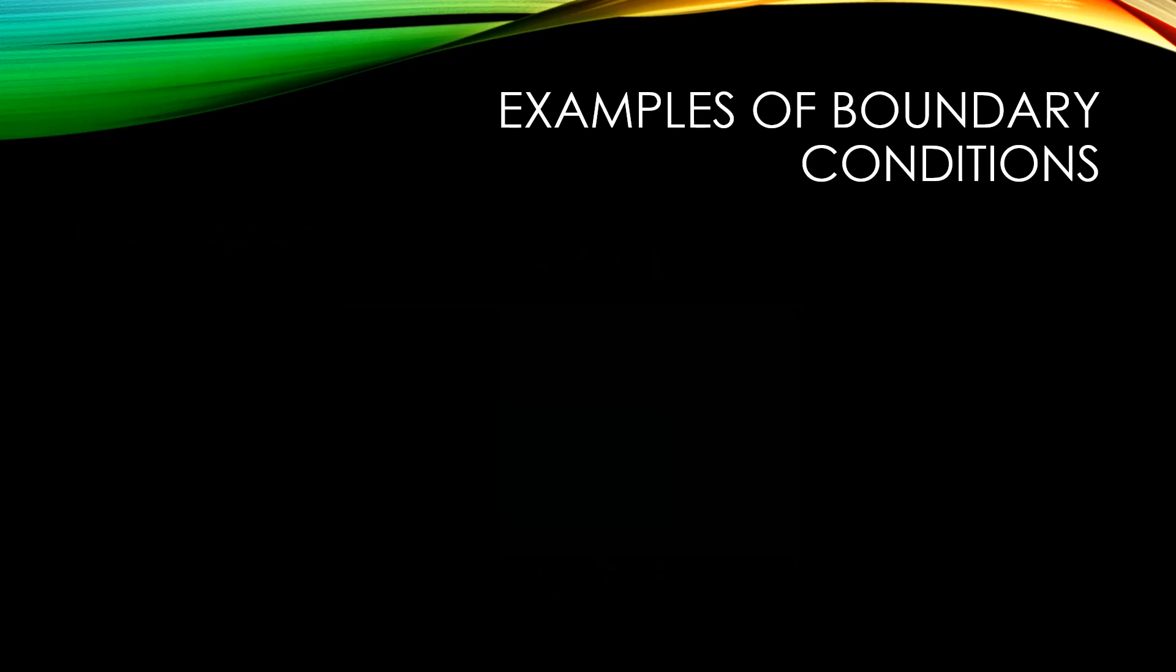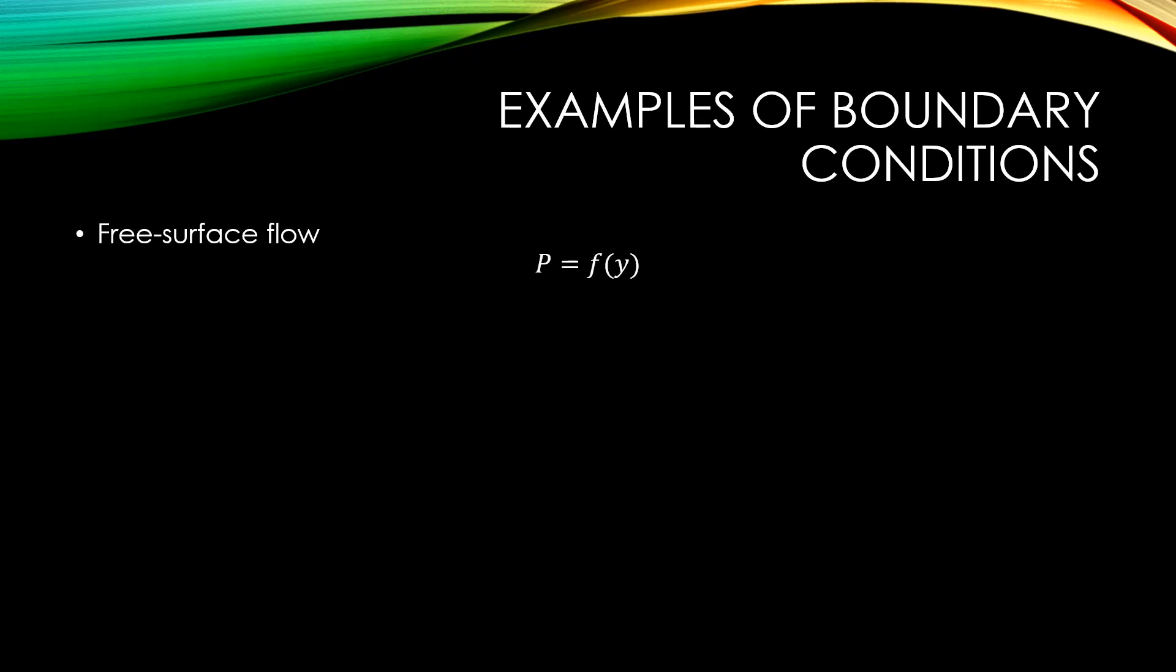Another example of a boundary condition can be found on free surface or open channel flow. In the following example, the pressure field is a function of the y, also known as the depth. We know that the pressure distribution is hydrostatic. We also know that at the surface, the pressure of the fluid particle is equal to the atmospheric pressure. Therefore, we can say that the pressure at y equals zero is equal to atmospheric pressure.